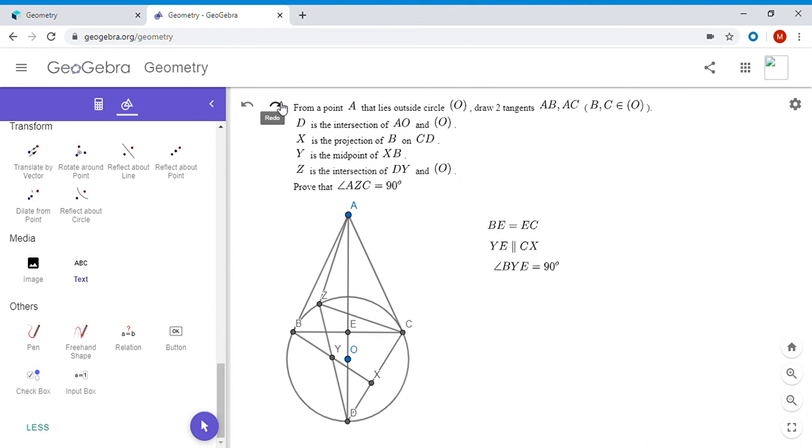And it turns out that YE lies on a line parallel to CD. Whenever you have a line parallel to CD cutting the chords at two points—so cutting BC and ZD at two points, in this case Y and E—it also happens that BZEY is cyclic.